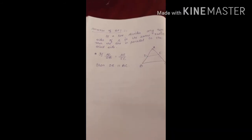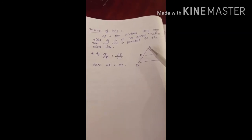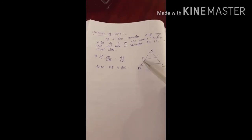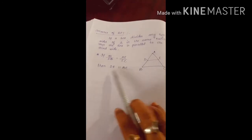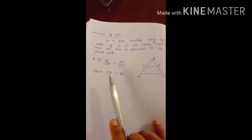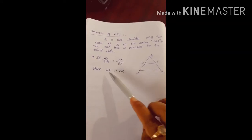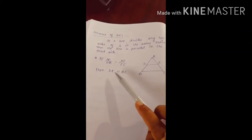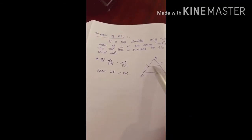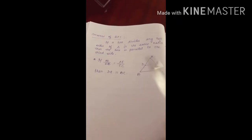That means what is given here — the ratio AD/DB is equal to AE/EC. When the corresponding side ratios are equal, we can say that line DE is parallel to BC. So whenever you are given the ratio equal, you can say that the third side will be parallel to the line which divides the two other sides of the triangle. This is the converse of BPT.